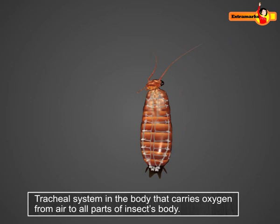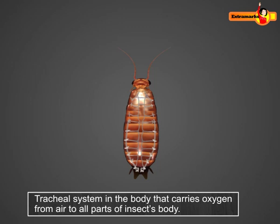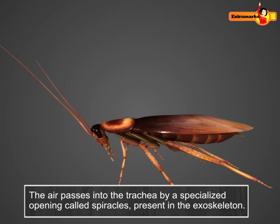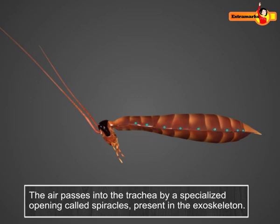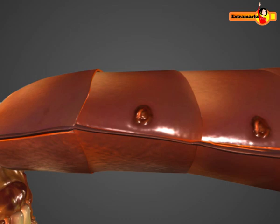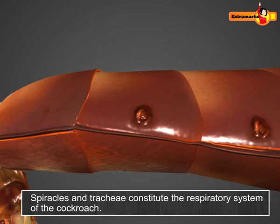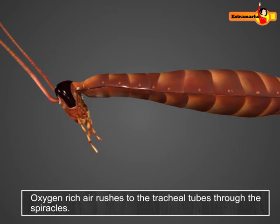The trachea form the tracheal system in the body, which carries oxygen from air to all parts of an insect's body and allows the diffusion of gases into the tissues. Air enters the trachea by specialized openings present in the exoskeleton called spiracles. These spiracles can be opened or closed by valves. Spiracles and trachea together constitute the respiratory system of cockroaches.